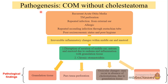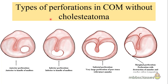The pathological findings — to repeat — are granulation tissue, permanent perforation of the pars tensa, ossicular chain damage, and lastly tympanosclerosis. Perforation is an important finding in chronic otitis media, so let us see the different types of perforation.